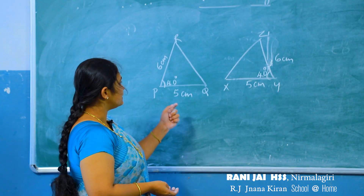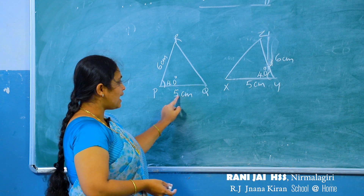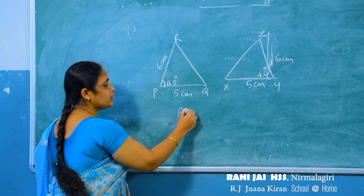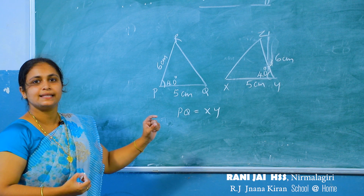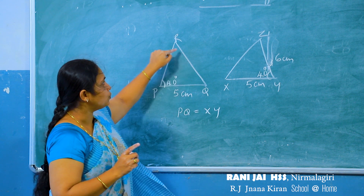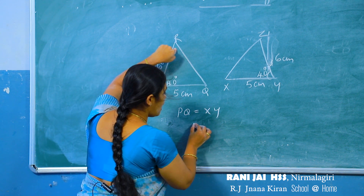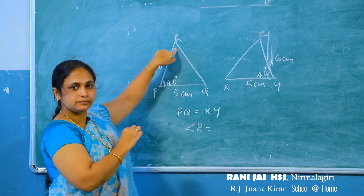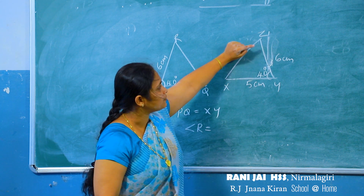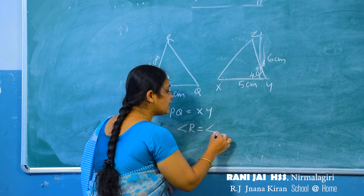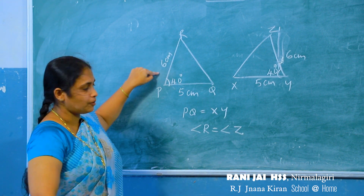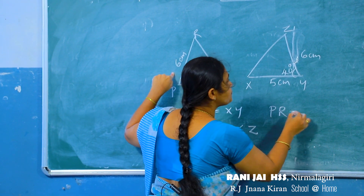Now consider this triangle. It is given that PQ equal to 5 centimeter and XY equal to 5 centimeter, so PQ equals XY. The angle opposite to PQ is angle R, and the angle opposite to XY is angle Z, therefore angle R equals angle Z.